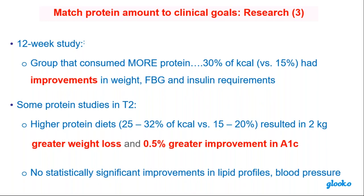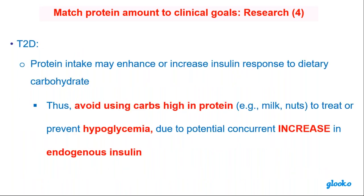What about matching protein to clinical goals? In a 12-week study, the group that consumed more protein — 30% of calories versus 15% — did have improvements in weight and fasting blood sugar. Higher protein diets of 25% to 32% of calories resulted in greater weight loss and 0.5% greater improvement in A1C. Protein intake can enhance insulin response to dietary carbohydrate, so we have to avoid using carbohydrate high in protein to treat hypoglycemia — we need pure carbohydrate to treat low blood sugar.